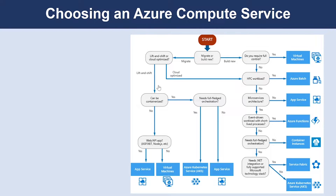If it is a lift and shift scenario, you will think about: can I containerize this environment? If yes, you will think about whether it requires any sort of orchestration. Based on that, you will choose the container environment. If you need orchestration, you will go with AKS. If you don't need orchestration, you will go with Azure App Service. If you don't want a containerized environment, you have plenty of other options such as Azure App Service or virtual machines.